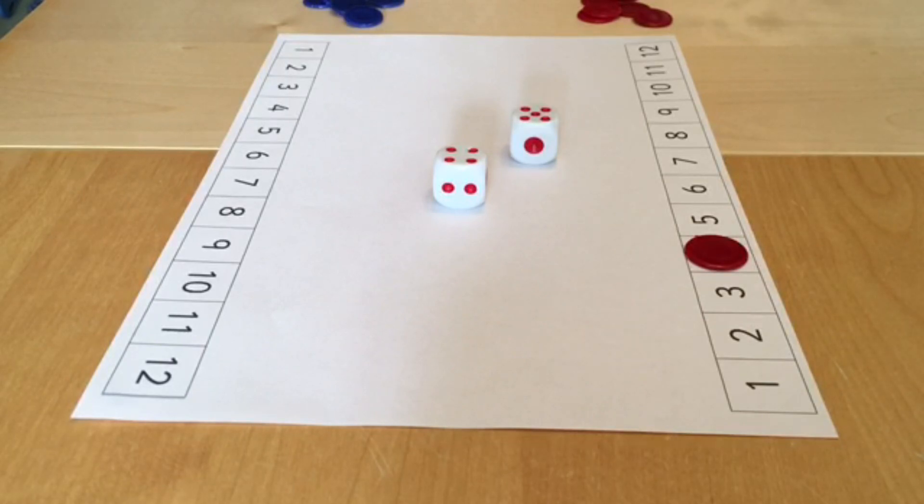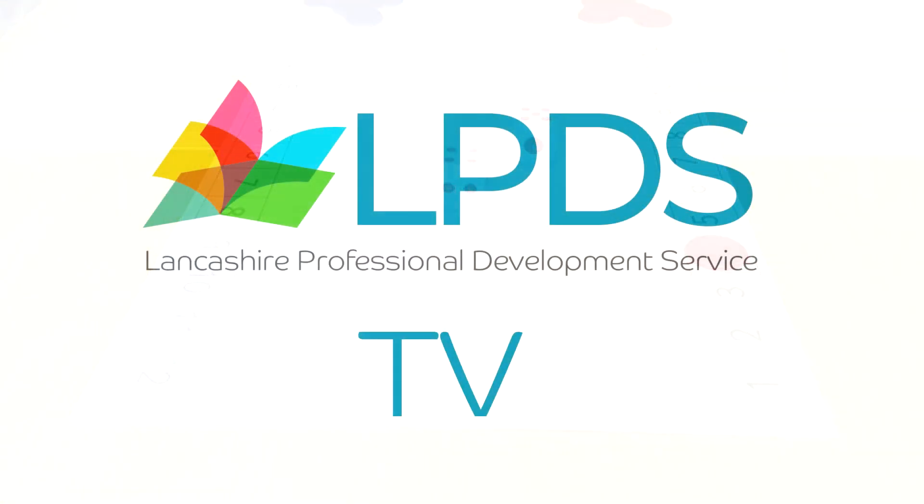Player two then does the same and the winner is the first person to cover all of their numbers. Those are just some of the rules that you can use to play that game. Why not have a go at making up some of your own rules to play? I hope you have fun with it and I'll see you next time.